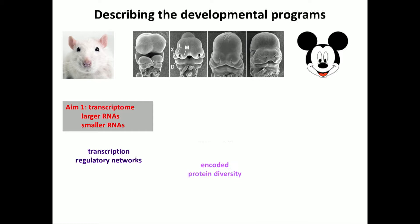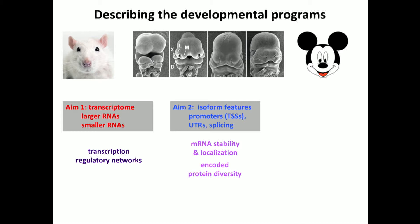Also looking at the isoforms — Hiram gave an excellent introduction to why this is important, and that the isoform information is particularly useful for thinking about things like post-transcriptional regulation, RNA stability and localization, as well as encoded protein diversity. And then in our third aim, we wanted to look at translational efficiency, because there's quite a bit of difference between what we see in the transcriptome and what we see in the proteins that accumulate in cells — and to integrate across all these levels to understand how we really make the machinery that builds the face.